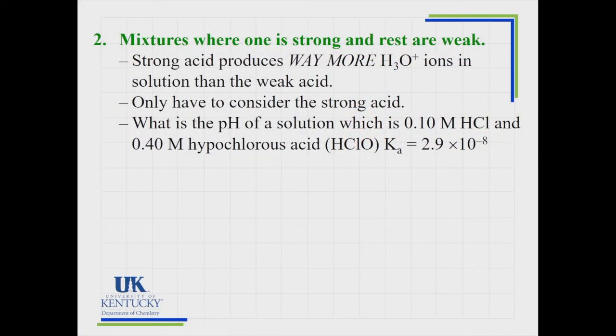Now we have a situation where one is strong and one is weak, or if you had more than one, the rest of them are weak. Strong acids are way, way stronger than our weaks. Strong acids ionize 100%, weak acids way less. And we're talking way less, less than 1% as much. So all you have to do is consider the strong acid when you do your calculations.